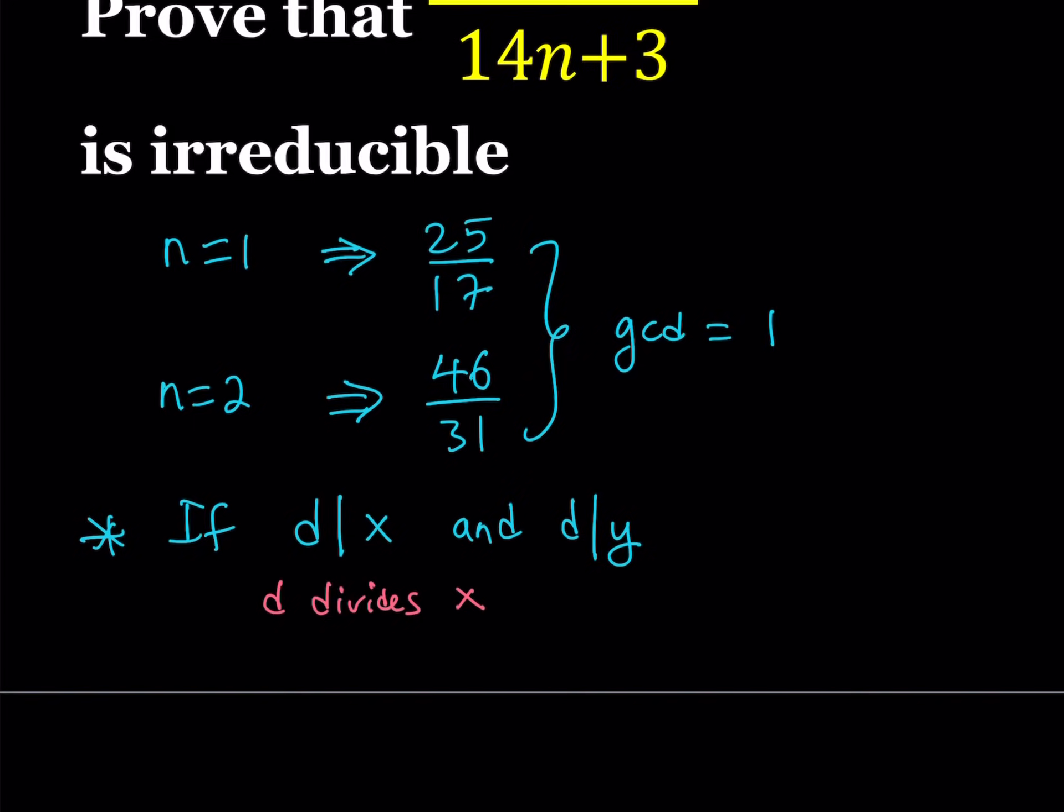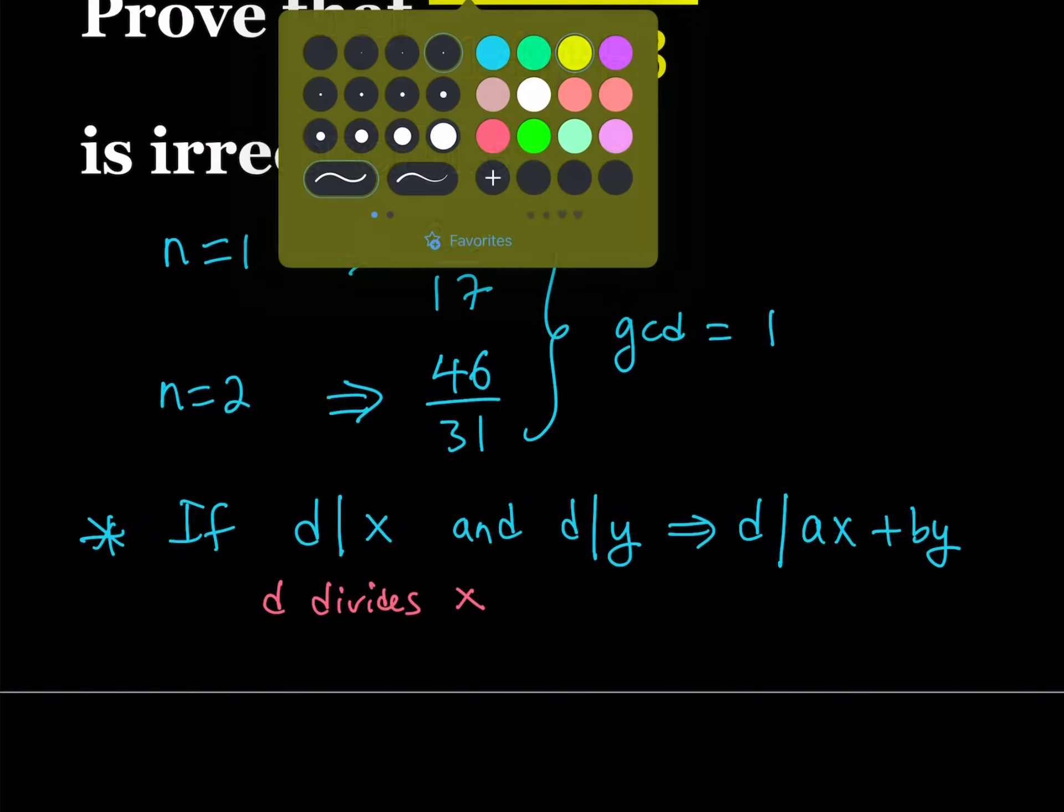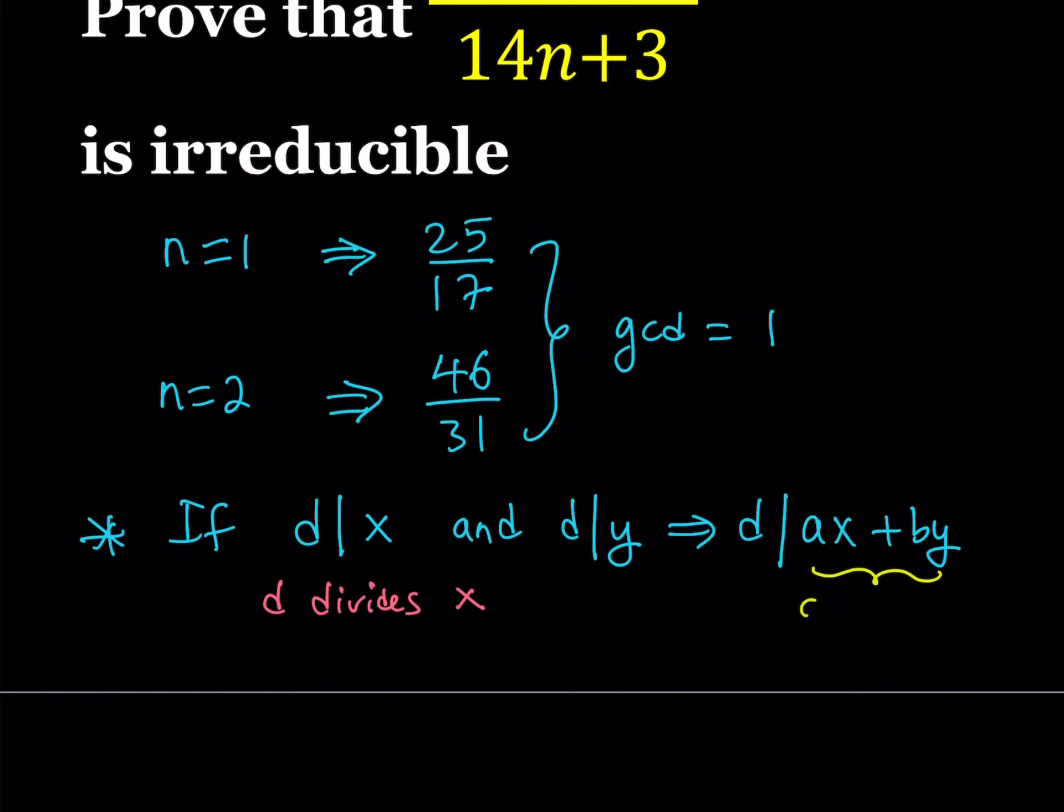Here's how it goes. If d divides x, x being an integer in this case, and d divides y, it could be the same one or another integer, then we have the following result, which is extremely powerful: d divides ax plus by. So if d divides x, we multiply x by some integer. a is an integer, b is an integer. And then we multiply y by another integer and we add those together.